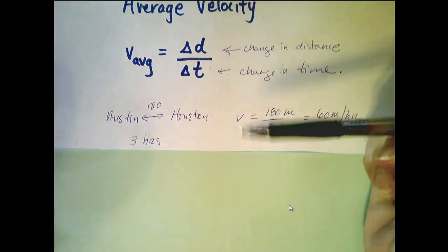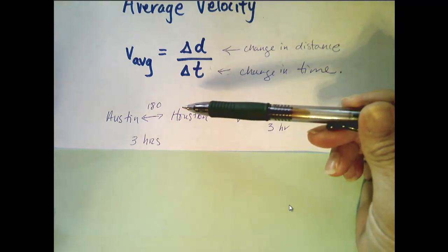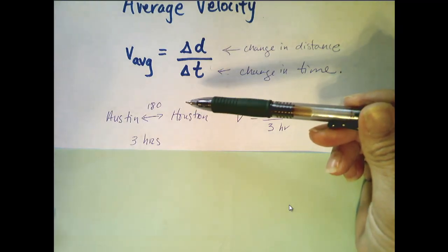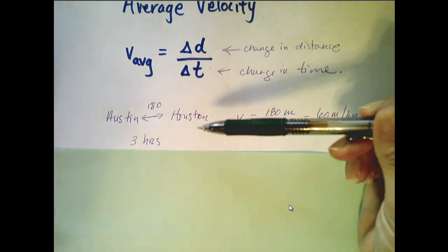For example, if I told you that I traveled between Austin and Houston regularly, and that the distance between those two cities is 180 miles, and it takes me three hours to travel that distance, then you would say, your average velocity on those trips is the total distance traveled, so 180 miles divided by the total time, which is three hours.